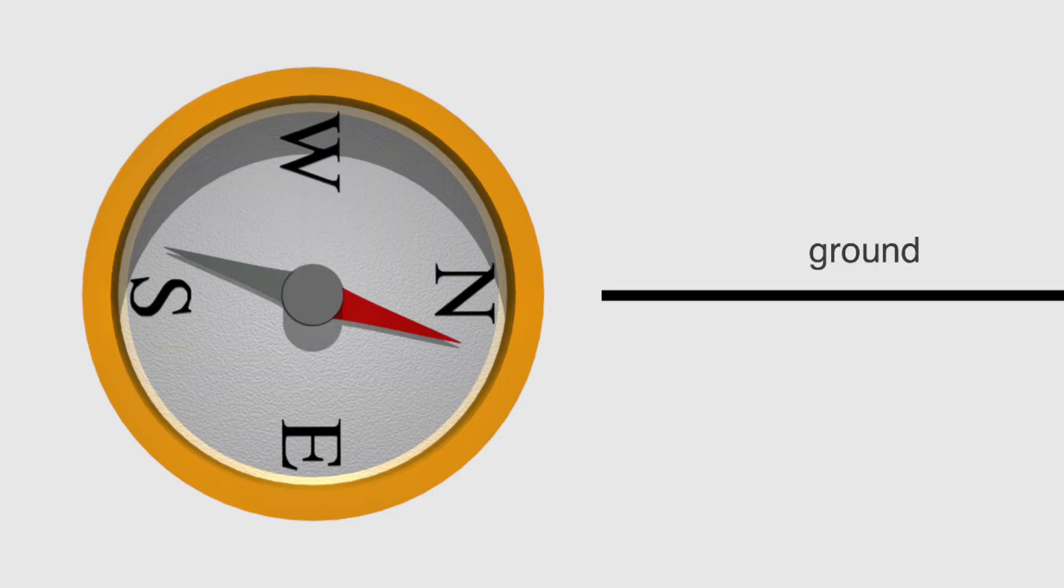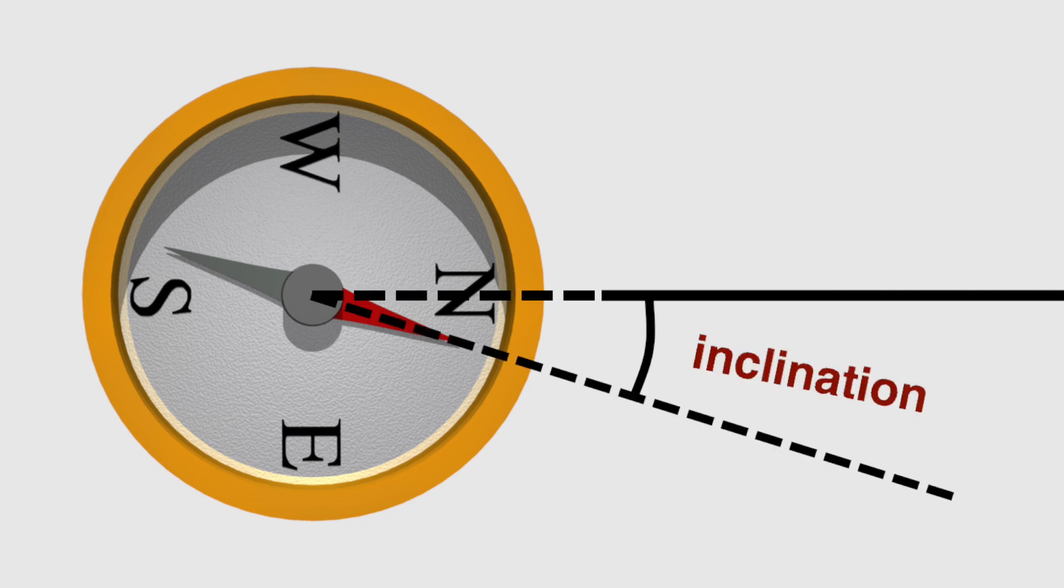Inclination is the angle between a horizontal line, the ground, and the vertical direction in which the magnetic field points. To measure it, simply turn your compass on its side so the needle can swing up or down.